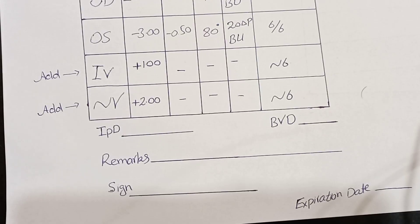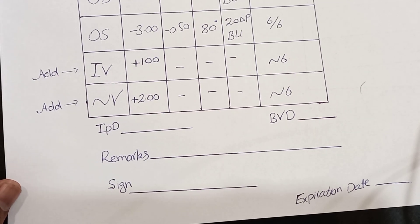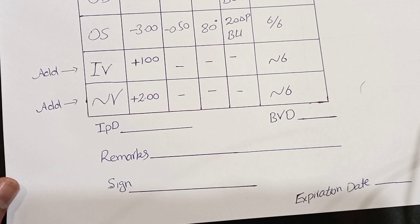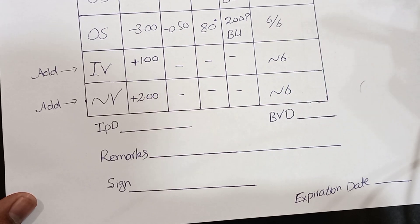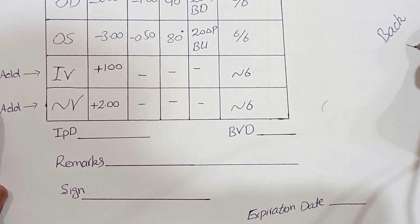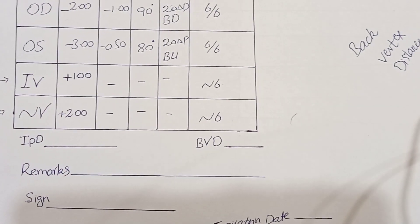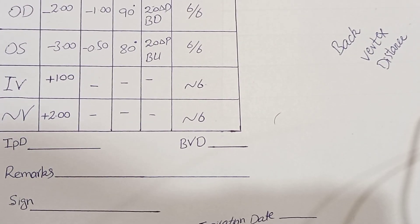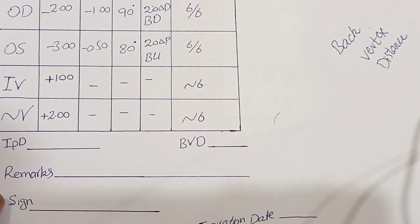IPD means interpupillary distance — the distance between the pupils — which is most important in dispensing optics and in optical labs. BVD stands for back vertex distance, which is really important for high prescriptions such as minus 6, plus 6, minus 7, minus 10, or plus 8 and above. We will discuss BVD in more detail in the next video.